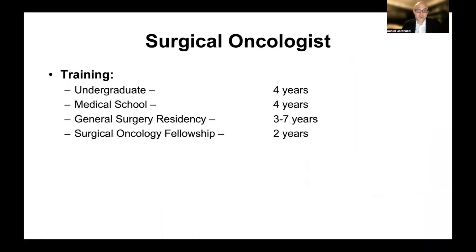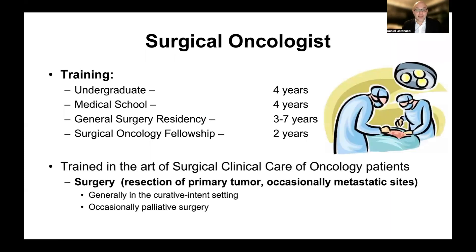The surgical oncologist also has a long history of training. After medical school, a general surgery residency ranges between three to seven years, on average about five years. A surgical oncology fellowship — specializing in surgeries for cancer — is another two years, usually at academic centers. Surgeons are trained in the art of surgical clinical care, typically looking at the primary tumor where it originated and removing it. Occasionally, in gastroesophageal cancer, there may be metastatic sites but only a few — called oligometastases — and we'll have a video specifically about that.